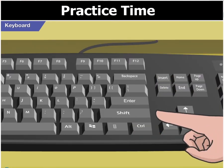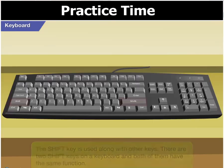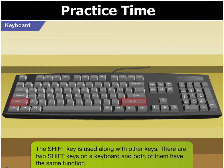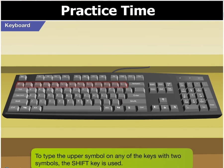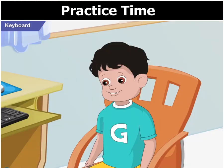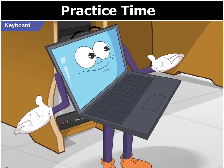What are these shift keys used for? The shift key is used along with other keys. There are two shift keys on a keyboard and both have the same function. When you want to type the upper symbol on any of the keys with two symbols, use the shift key. So if I want to type the symbol plus, I have to press the shift key along with the key that has the symbol. Yes, Goggle.